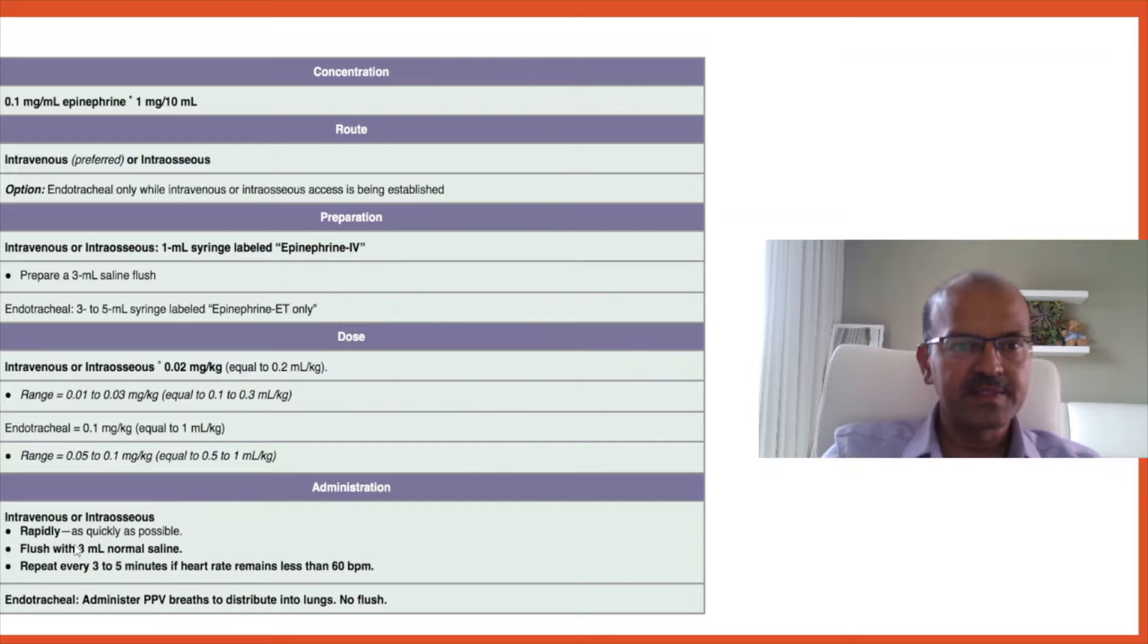The dose when given intravenously should be administered as quickly as possible, flushed with 3 mL normal saline, and repeated every 3 minutes. If you've given the first dose endotracheally and the baby continues to need chest compressions, once the UVC is in, you don't need to wait 3 to 5 minutes because the ET dose is recognized as not being an effective dose.